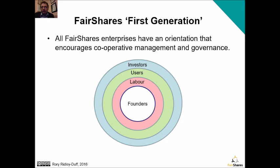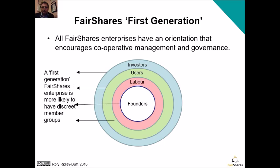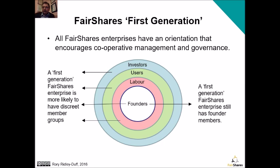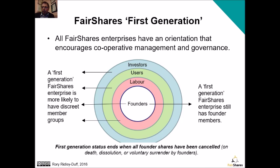A first-generation fair shares enterprise will encourage cooperative management and governance involving all four member groups, and throughout that first generation it's more likely that you will have discrete member groups. A first-generation enterprise retains that status until all founder shares have been cancelled — which might occur when founders die, when a founding organisation is dissolved, or when an individual or legal entity surrenders their shares to hand them over to the other stakeholders.